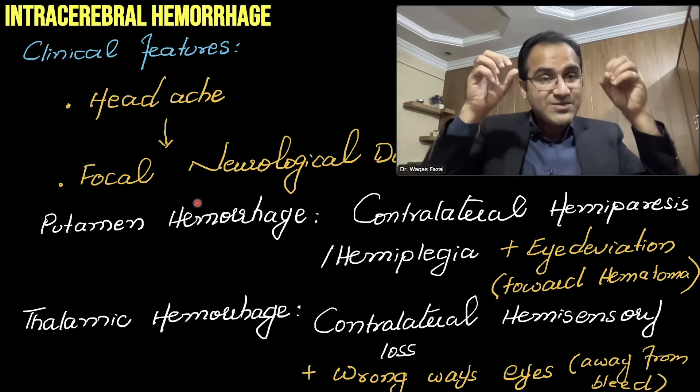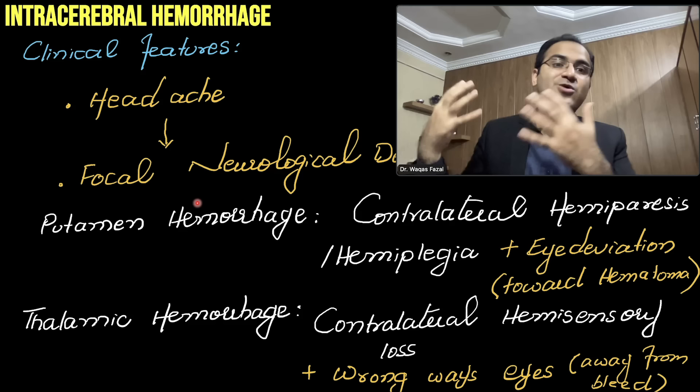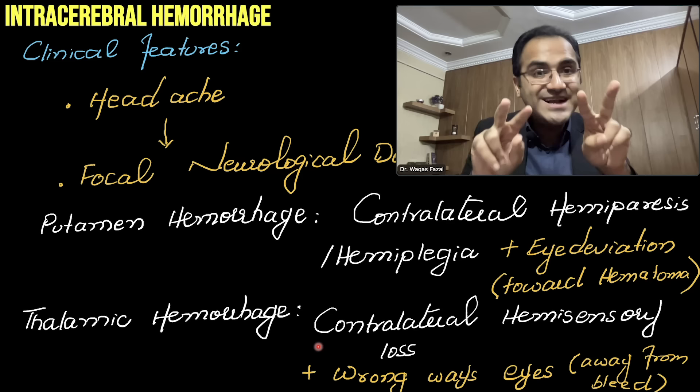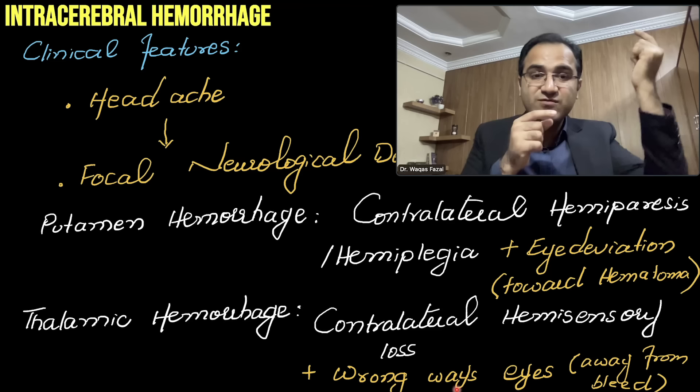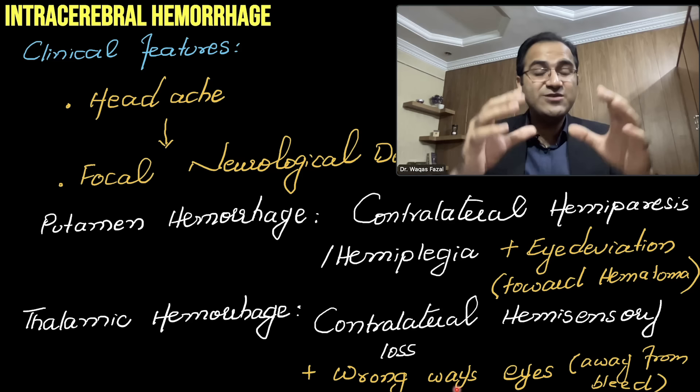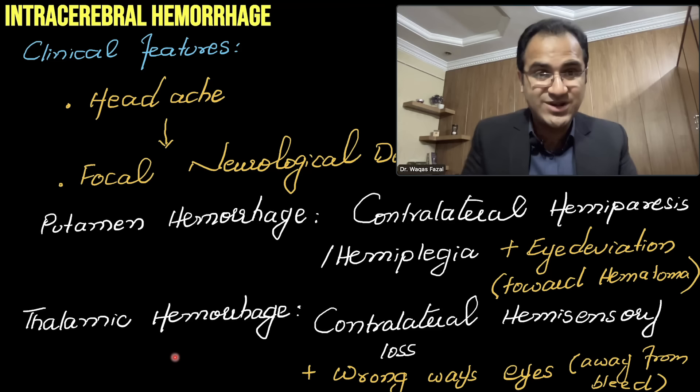The key differentiating factor between putamen and thalamic hemorrhage is eye deviation. In putamen hemorrhage, the eyes deviate toward the hematoma. In thalamic hemorrhage, the eyes deviate away from the bleed. To summarize: putamen hemorrhage causes motor loss with eyes deviating toward the hematoma; thalamic hemorrhage causes sensory loss with eyes deviating away from the hematoma.